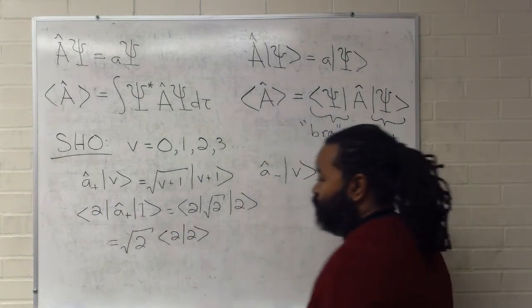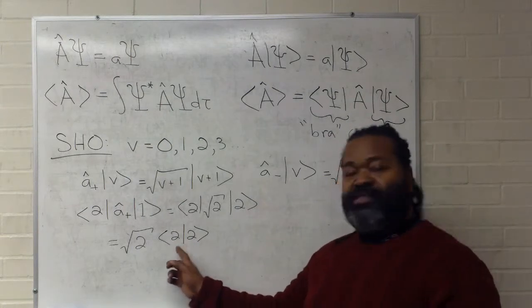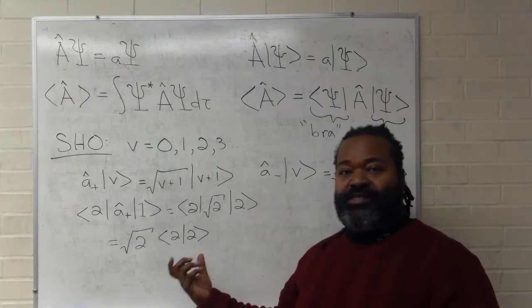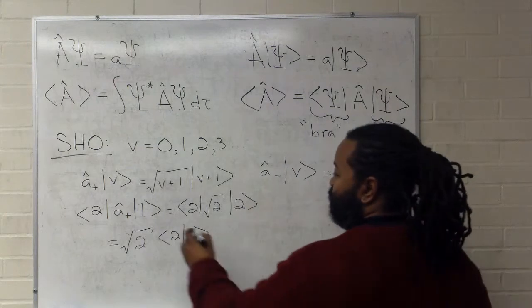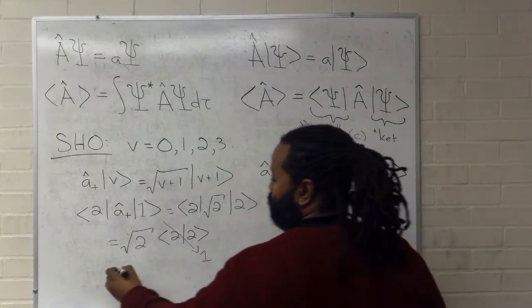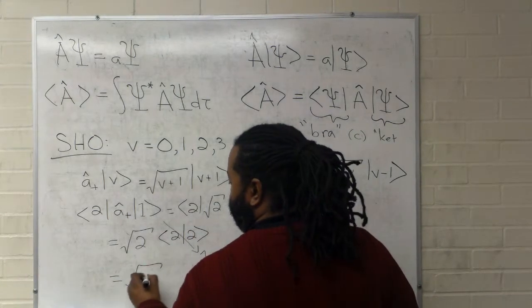And now, we have two indices that are identical. This is an orthonormal set. So, this entire thing becomes one. And we have our final answer here.